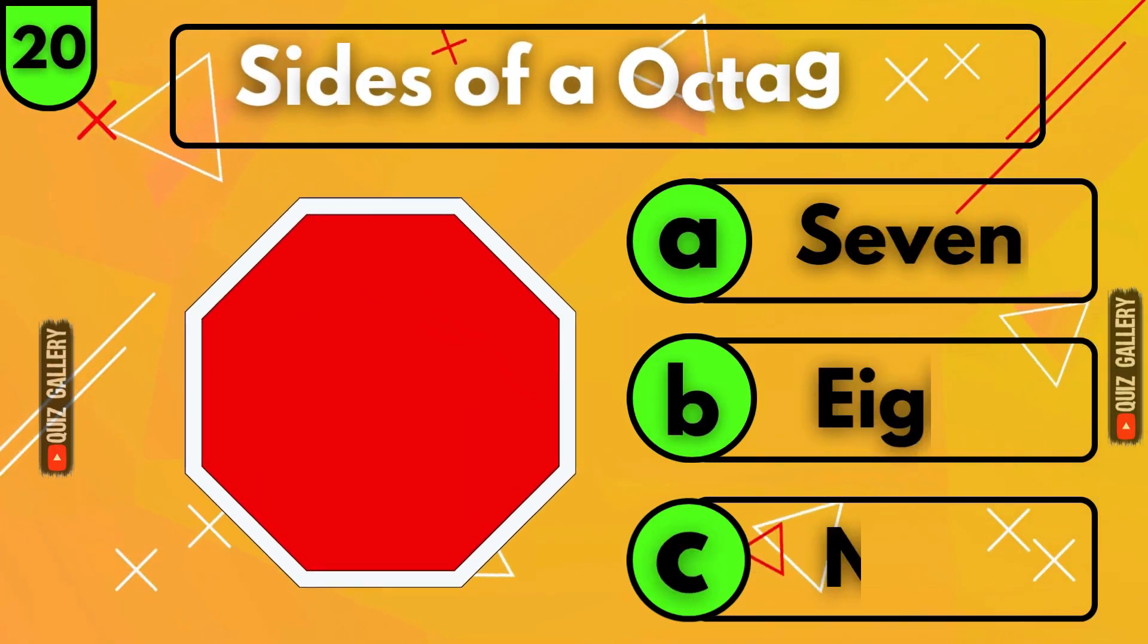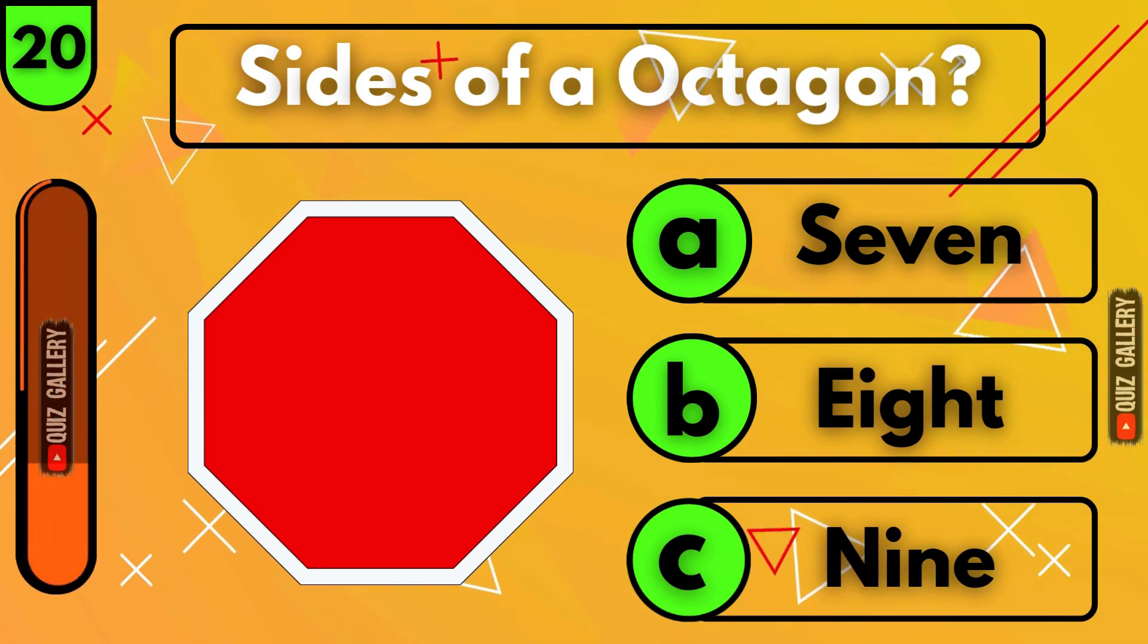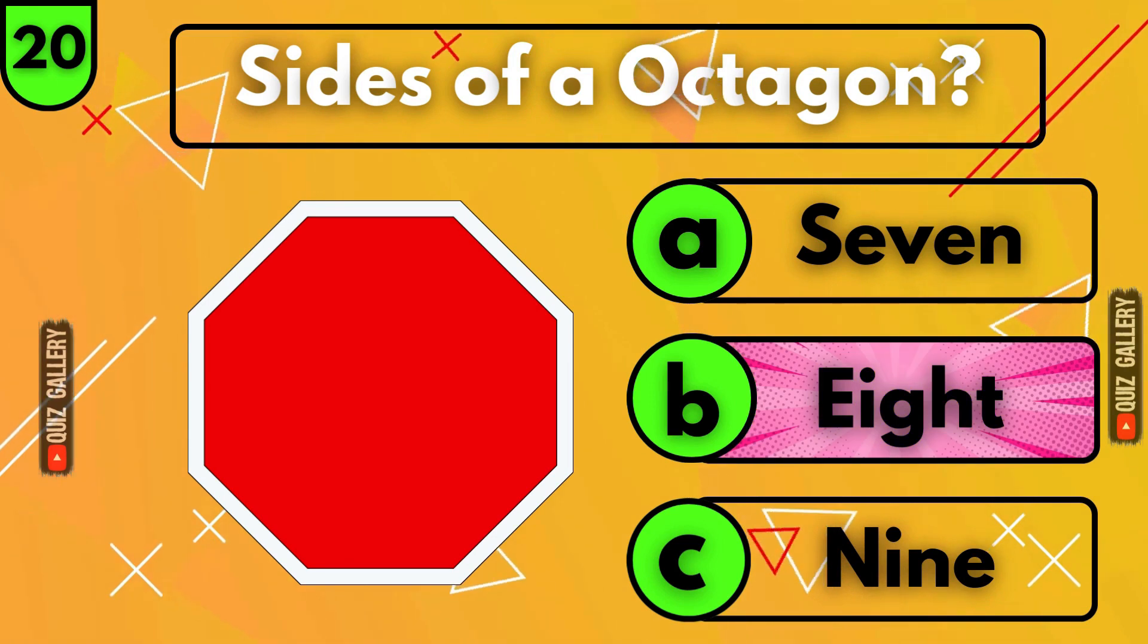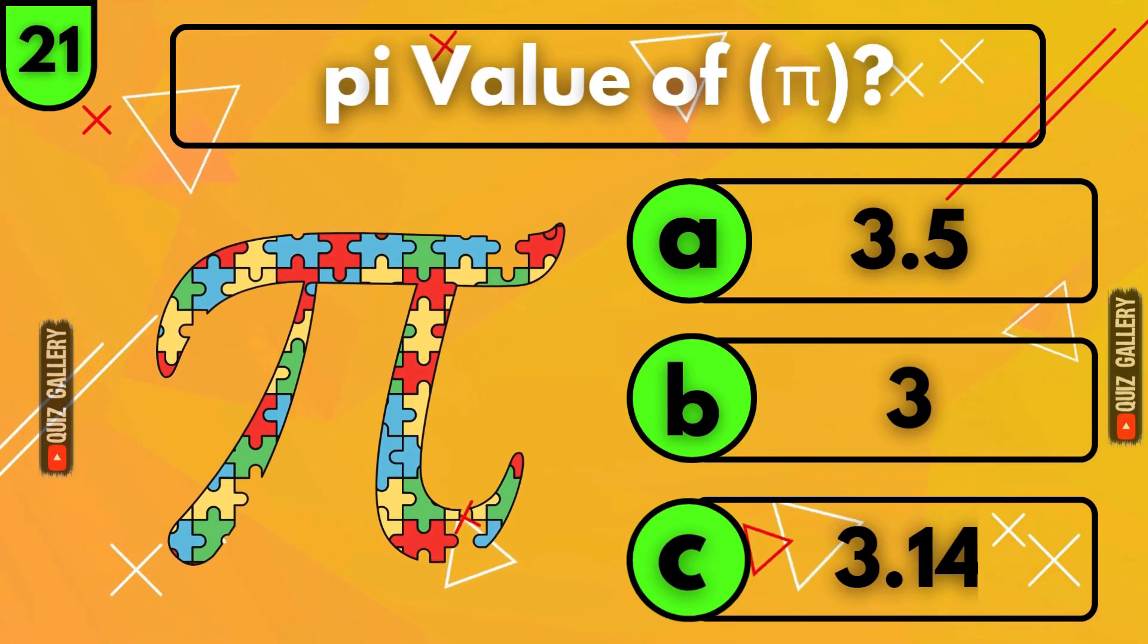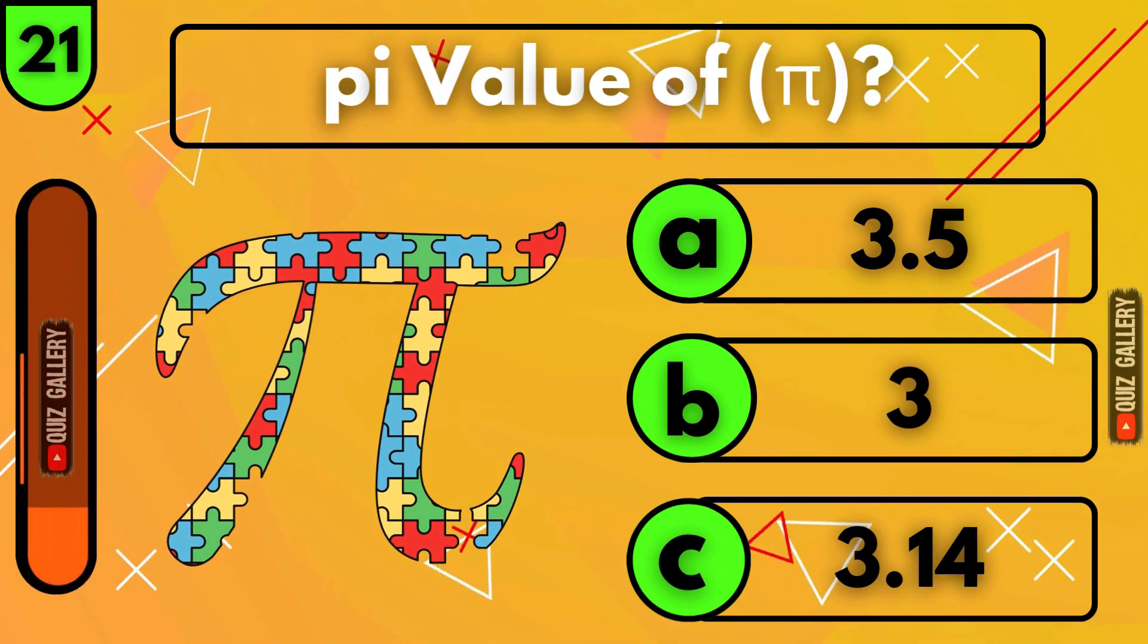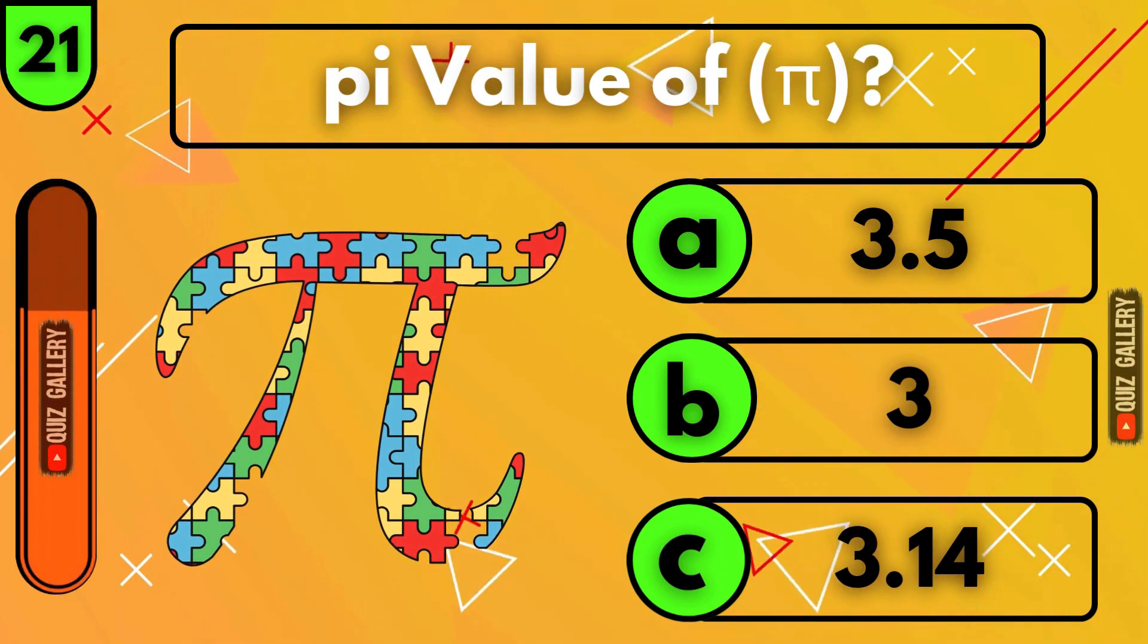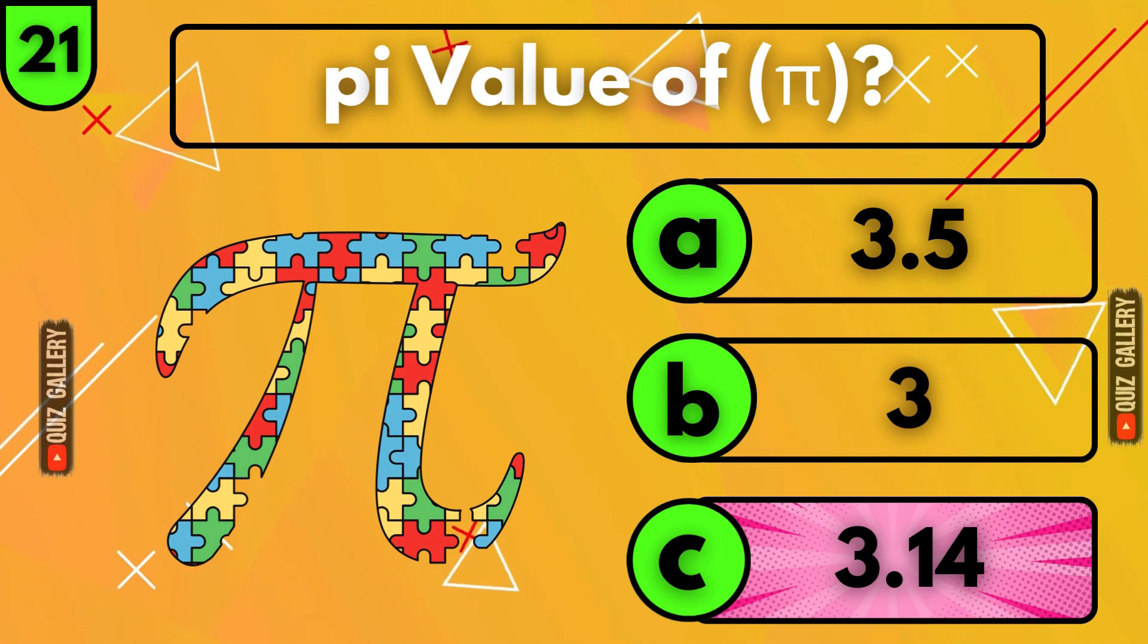How many sides does an octagon have? Eight sides! What is the value of pi? 3.14